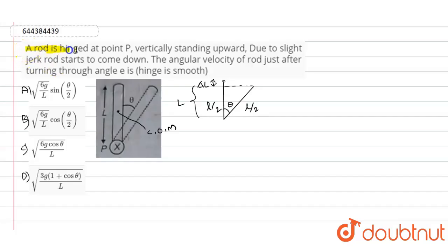So guys, in this question it is given that our rod is hinged at point P, vertically standing upward. Due to the slight jerk, rod starts to come down. The angular velocity of rod just after turning through an angle theta is - so the hinge is smooth, it seems.